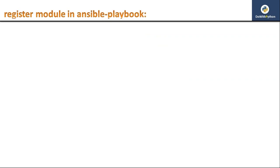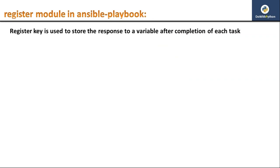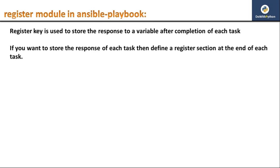The first module is the register module in Ansible playbook. The register module is simply used to store the response after completion of any task. Suppose you are going to create some folder or file on a remote server — after creation of that file it will produce some response. To see that response you must store it, and if you store it into some variable then you can print it on your command line.